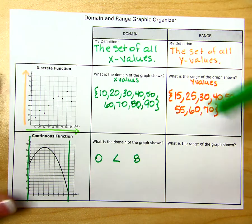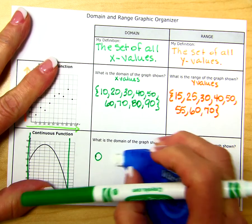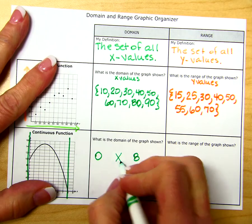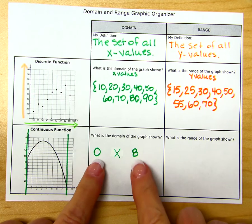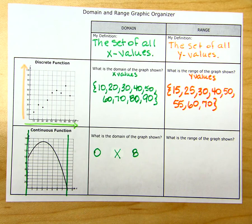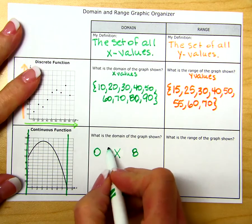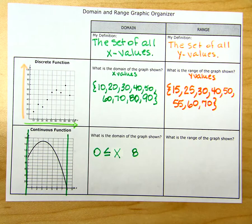Our x values go in the middle — so we have an x in the middle, with every x value being between 0 and 8. It does equal 0, so when we use our inequality symbol, we're going to use less than or equal to.